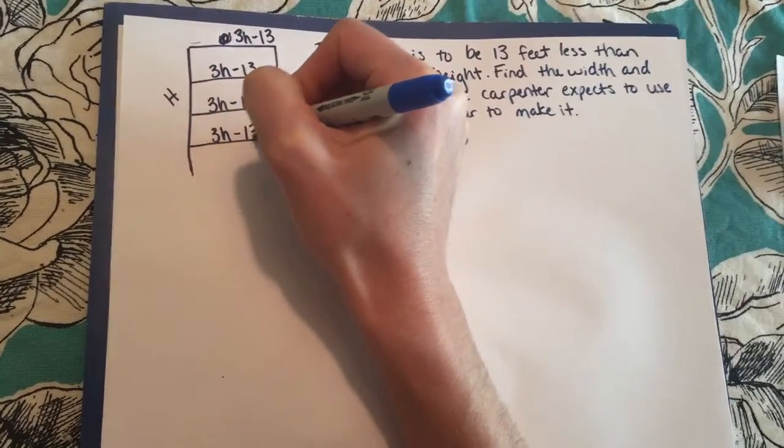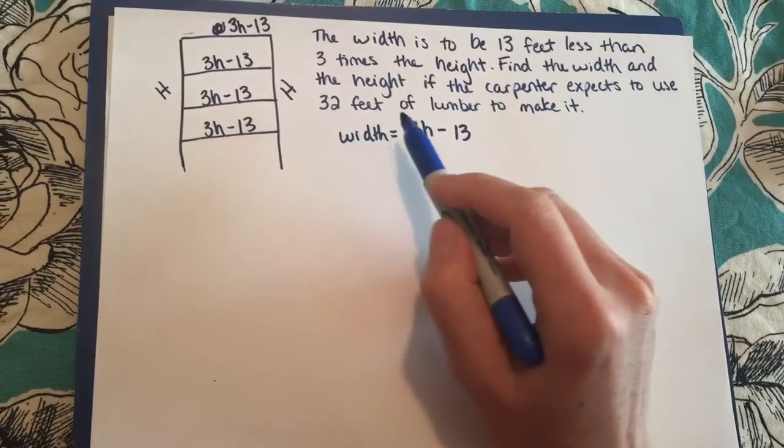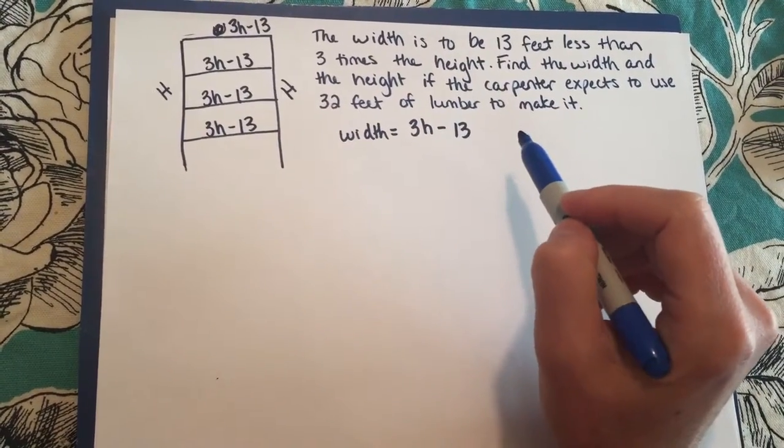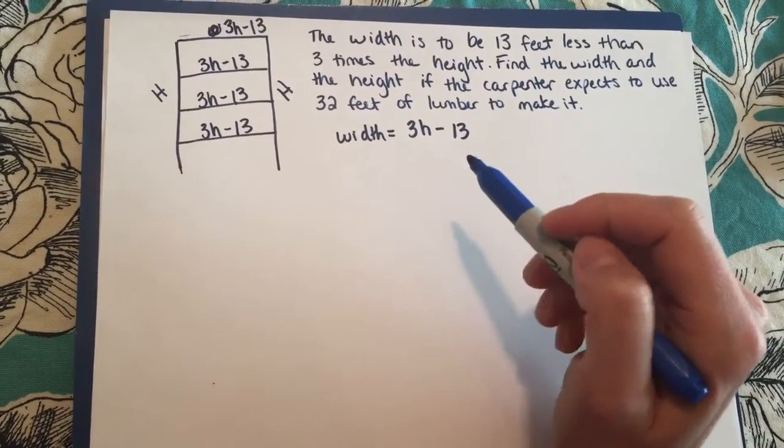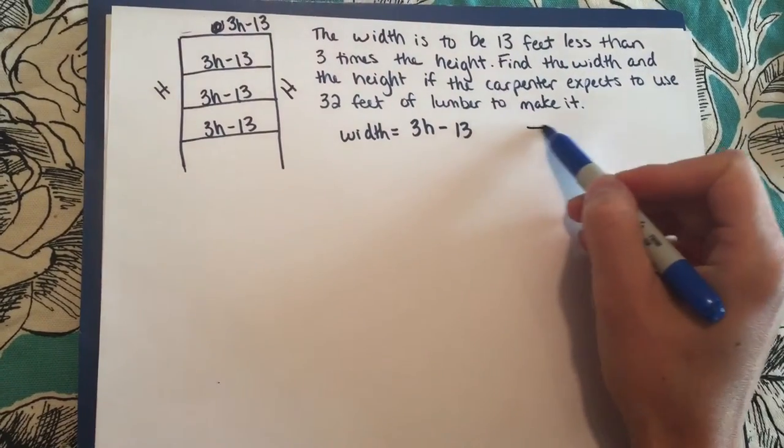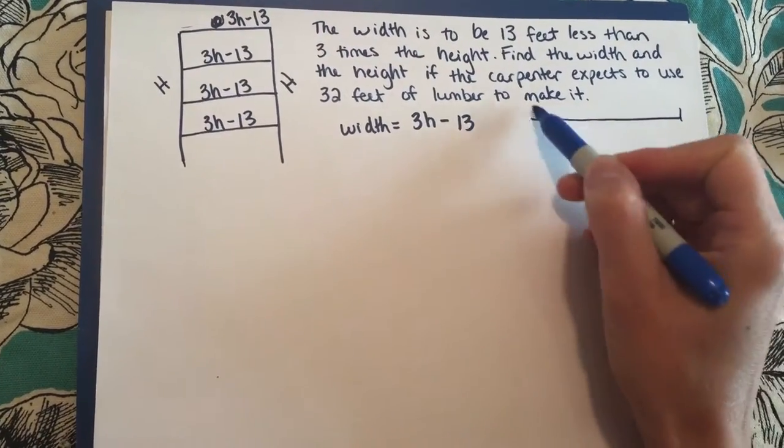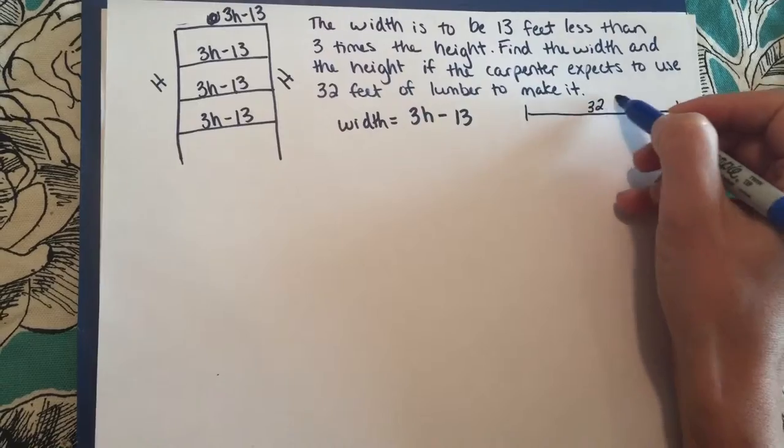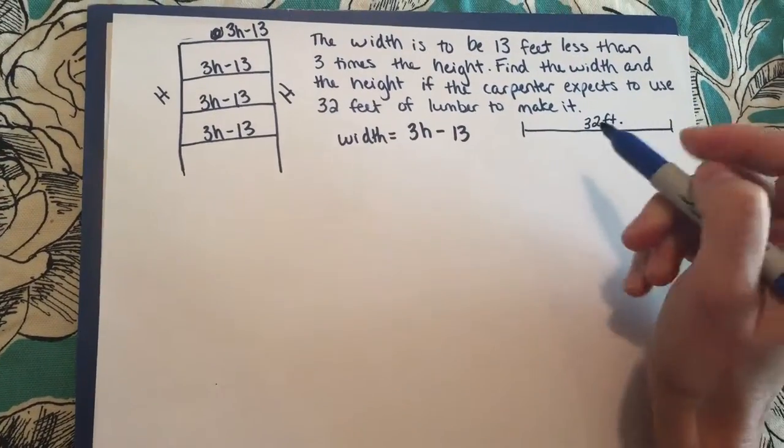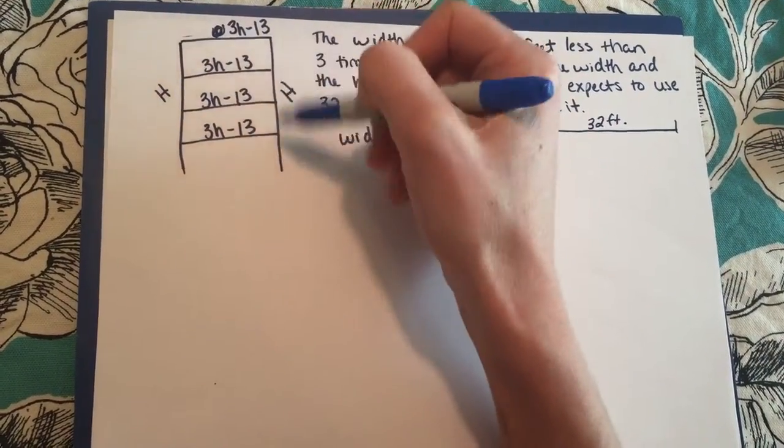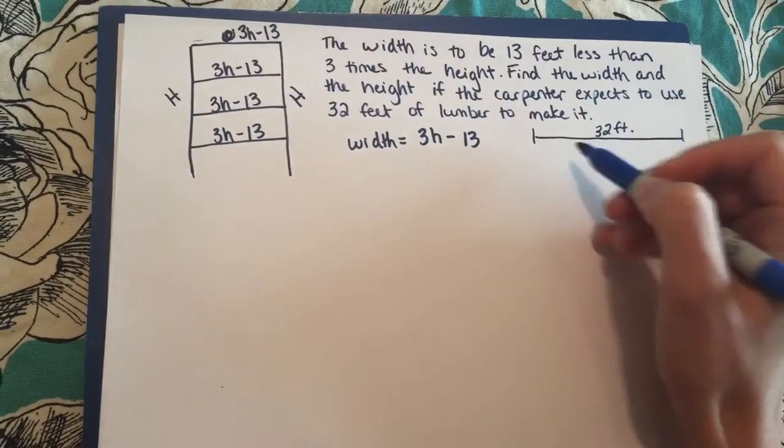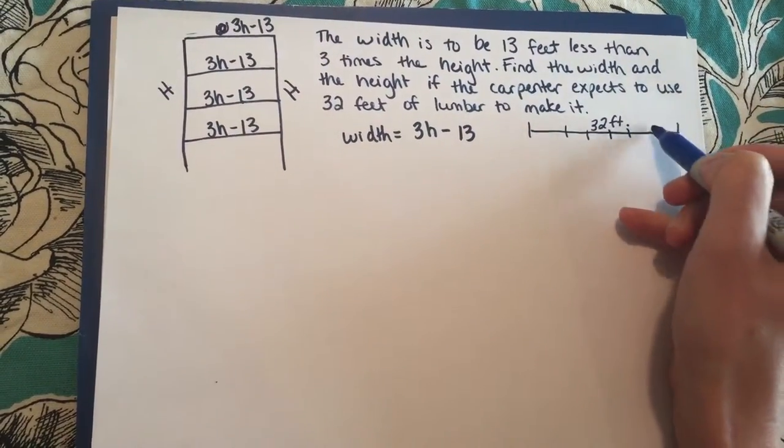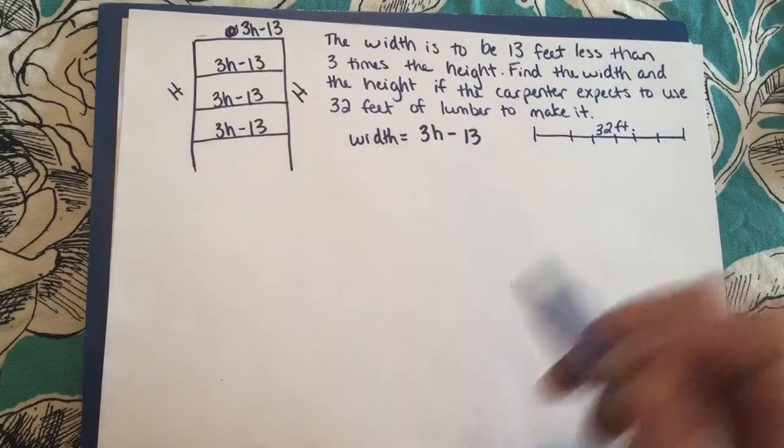Okay, now they tell us that they want to use 32 feet of lumber to make it. So if you want to think about it, we've got this super long huge 32 foot piece of lumber and I need to separate it into 1, 2, 3, 4, 5, 6 sections. So I'm trying to figure out where am I cutting this.